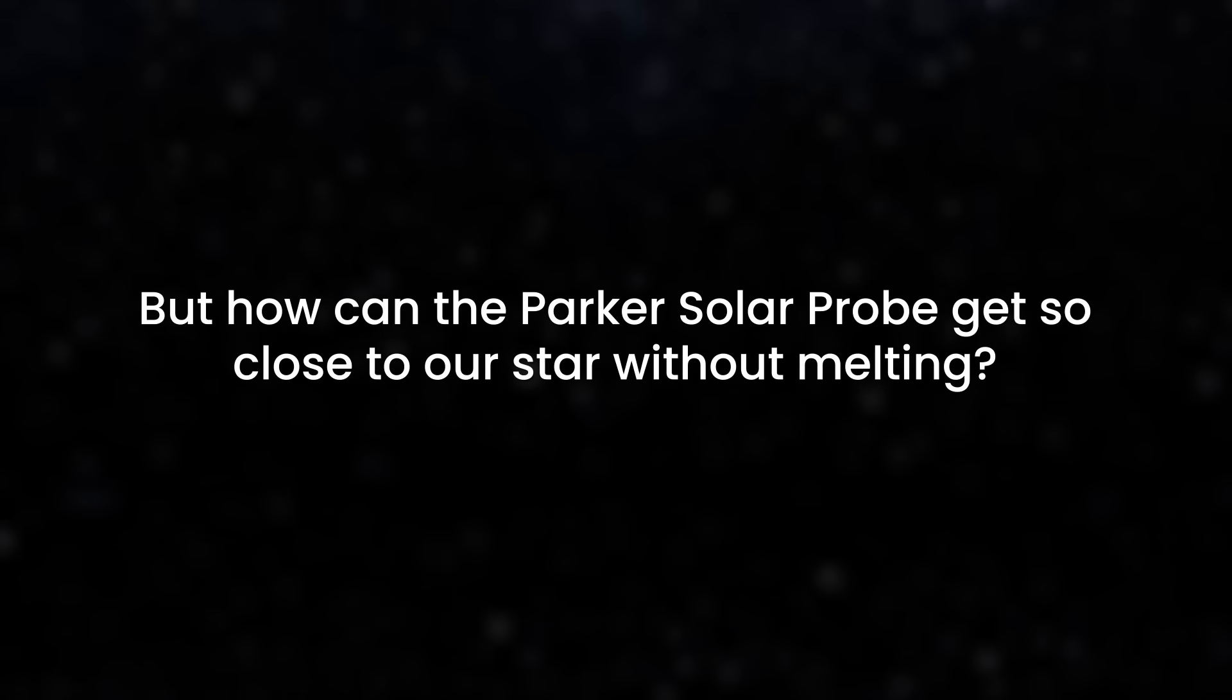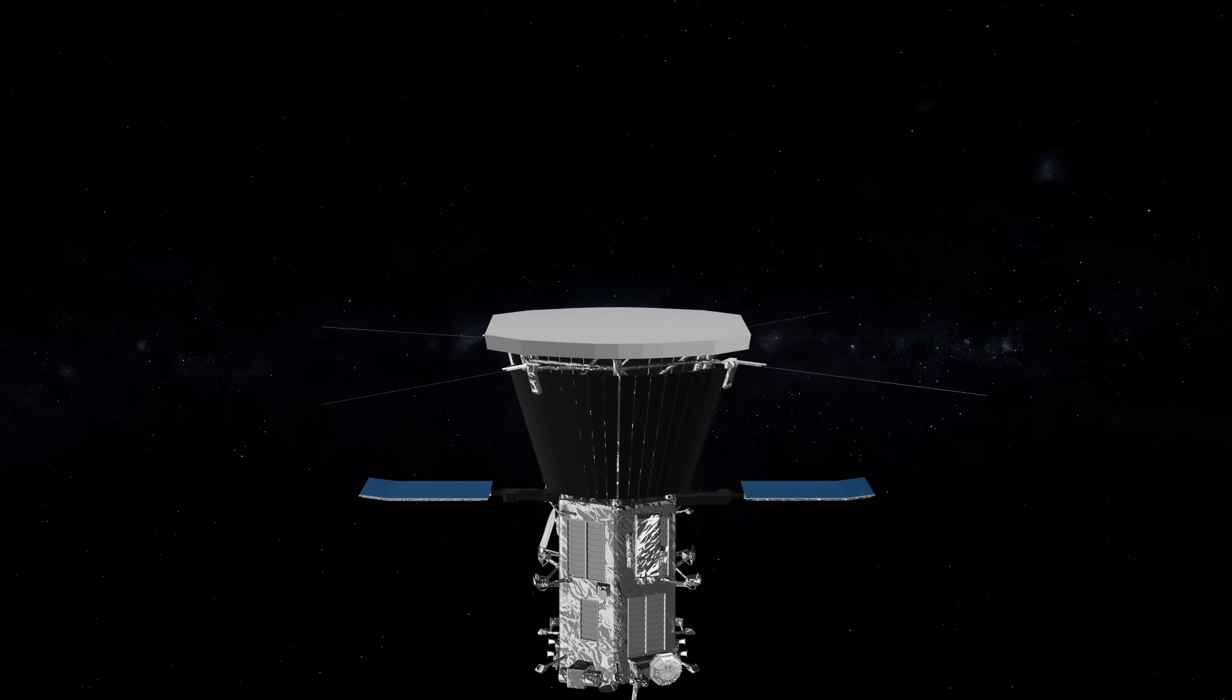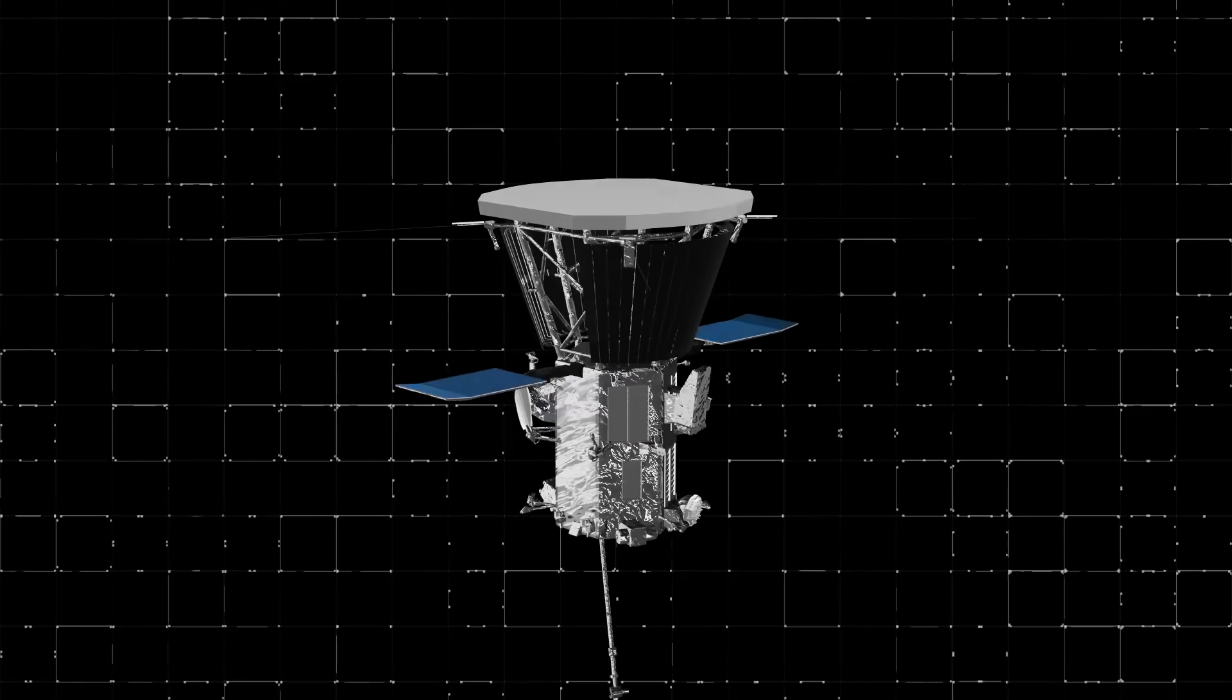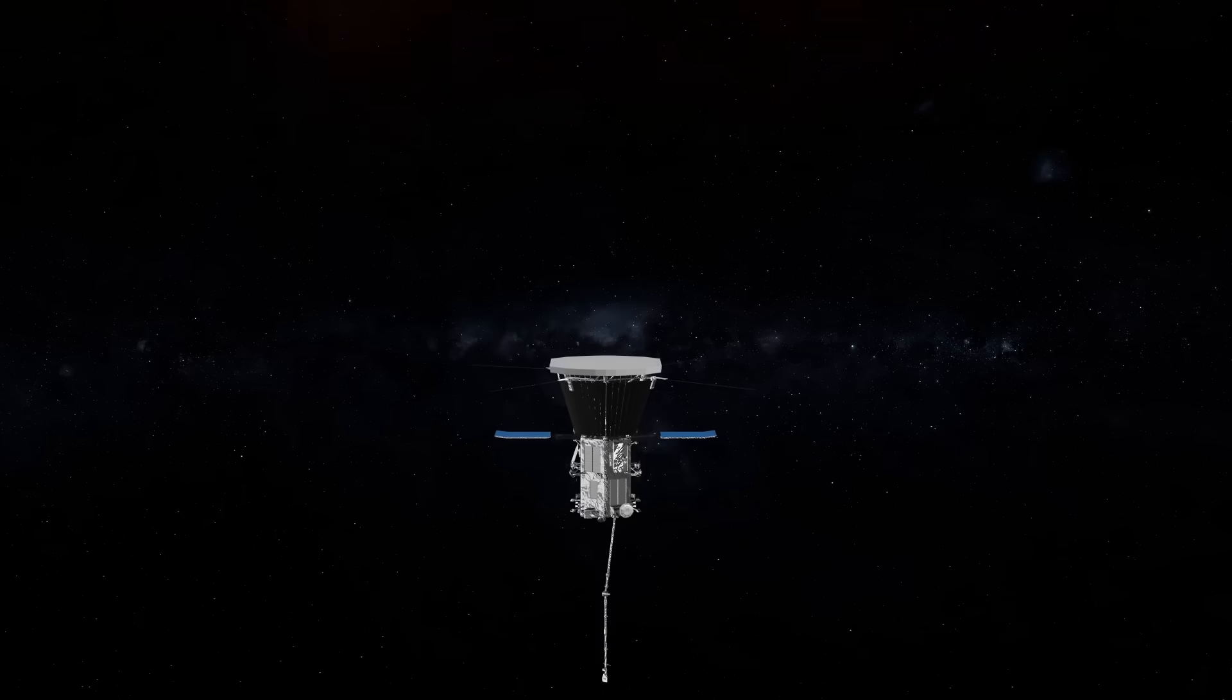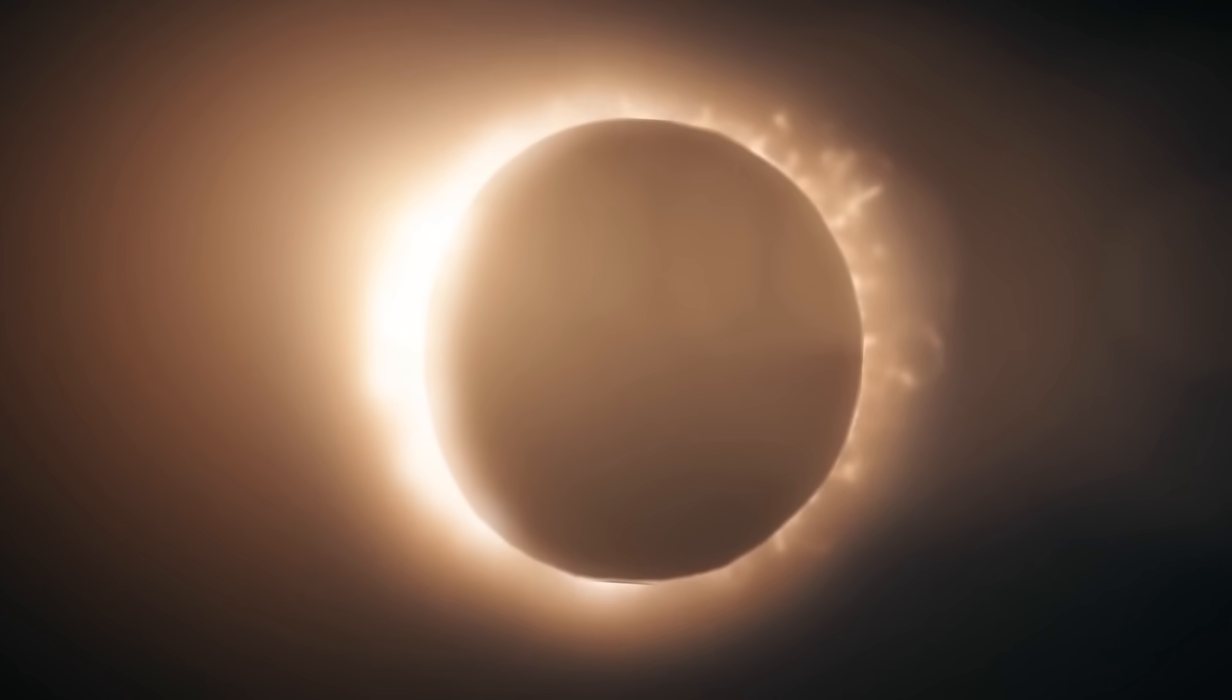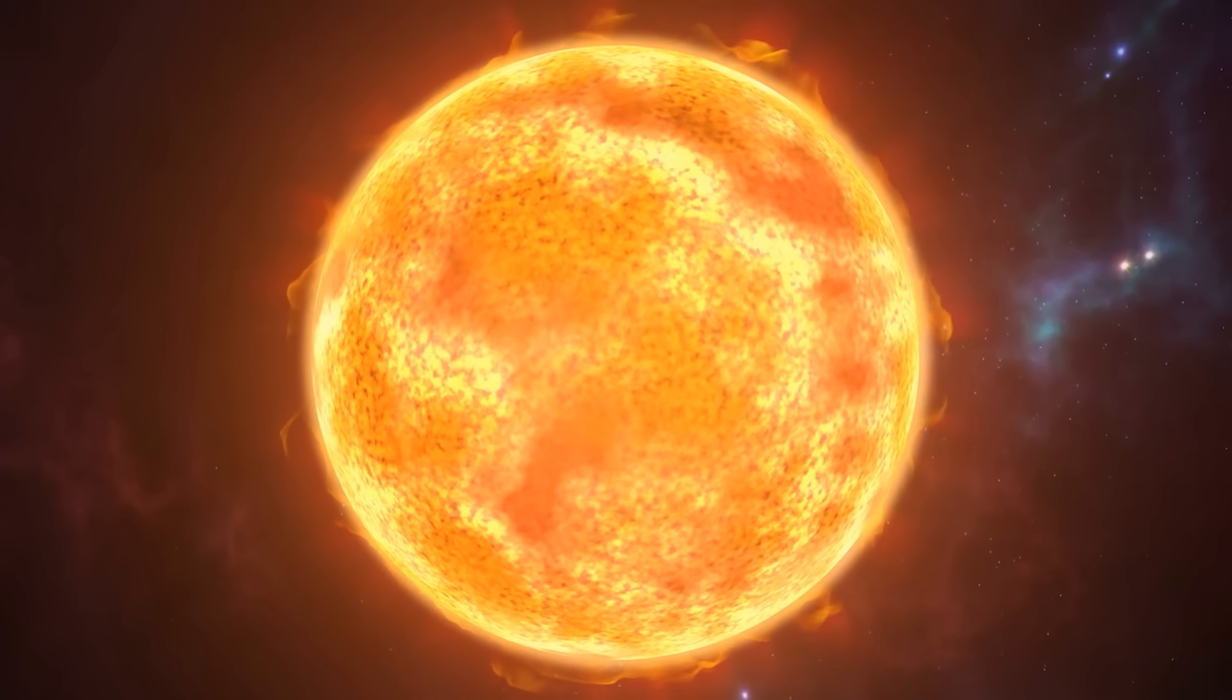But how can the Parker Solar Probe get so close to our star without melting? To study the sun under such extreme conditions, the probe and its instruments are equipped with a super-reflective coating and a shield that measures 2.3 meters in diameter facing the sun. The shield, called the Thermal Protection System, is made of 11.5 centimeters of thick carbon composite. This makes the Parker Solar Probe capable of withstanding temperatures outside the spacecraft that reach roughly 1,370 degrees Celsius. And even though that might not seem like enough protection, the density of the sun's corona isn't high, and not many particles actually hit the probe.